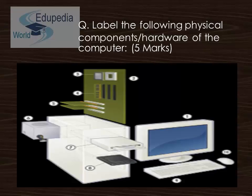At label six we have the power supply; at label seven, the optical disk drive; at label eight, the hard disk drive; at label nine, the keyboard; and finally at label ten, the mouse.